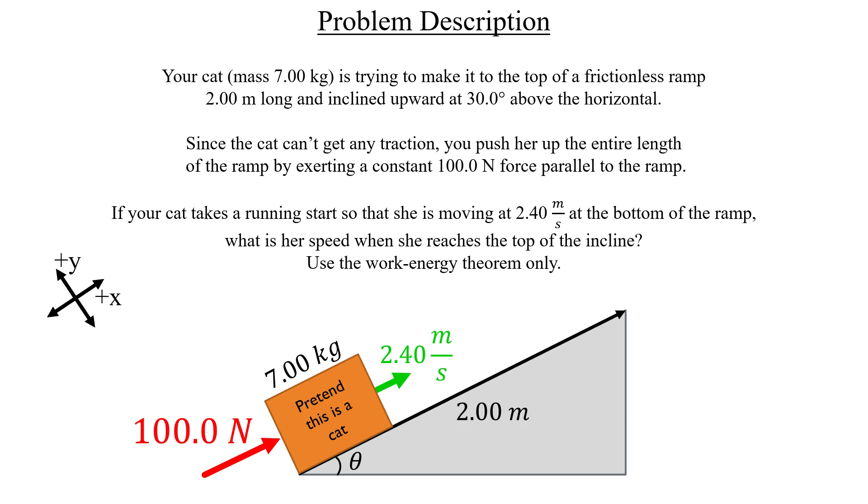The only forces that will do work are along the direction of the ramp, which are the force we're applying, which is positive, and then the x-component of the cat's weight, which is negative.